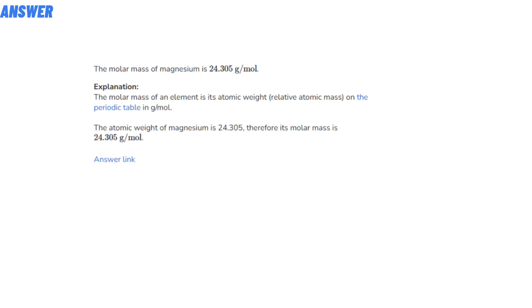The molar mass of magnesium is 24.305 grams divided by mole. Explanation: The molar mass of an element is its atomic weight.